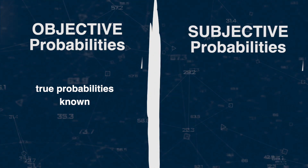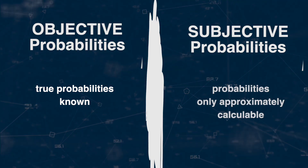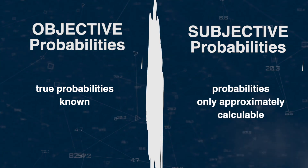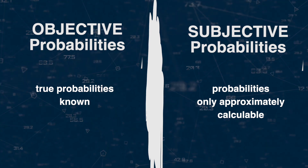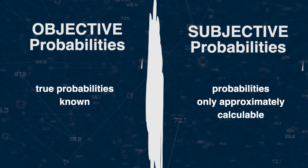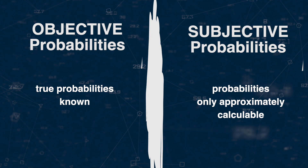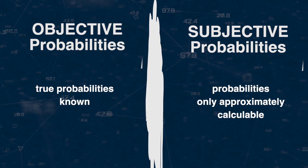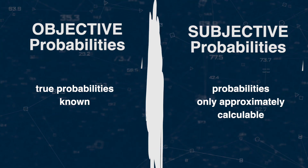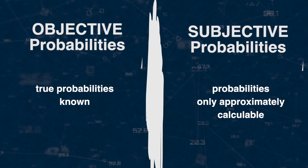On the other hand, subjective probabilities involve situations where individuals assess the likelihood of an event based on their own judgment, models, or analysis. The more subjective a probability is, the more cautious a bettor has to be. For example, it has a huge influence on correct money management.